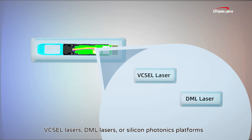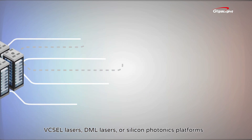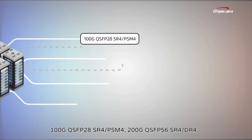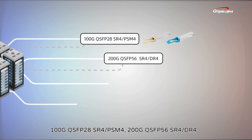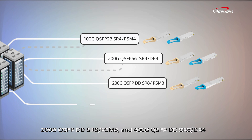The high-speed parallel optical modules are designed with VCSEL lasers, DML lasers, or silicon photonics platforms. Examples include 100G QSFP28 SR4-PSM4, 200G QSFP56 SR4-DR4, 200G QSFP-DD SR8-PSM8, and 400G QSFP-DD.